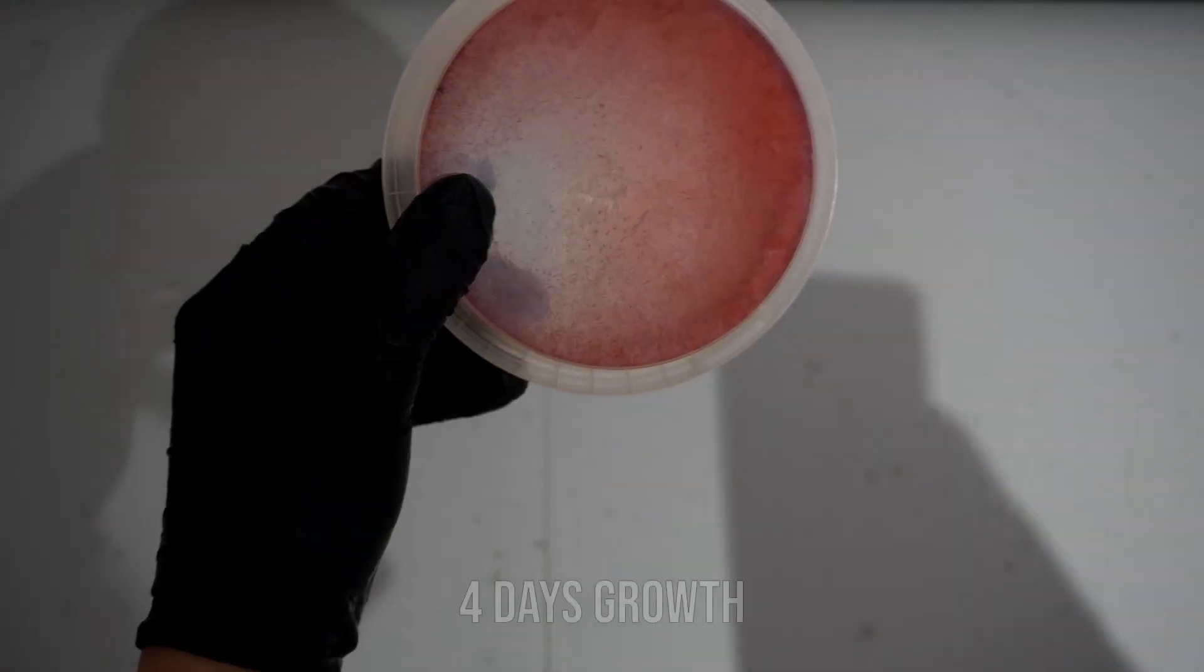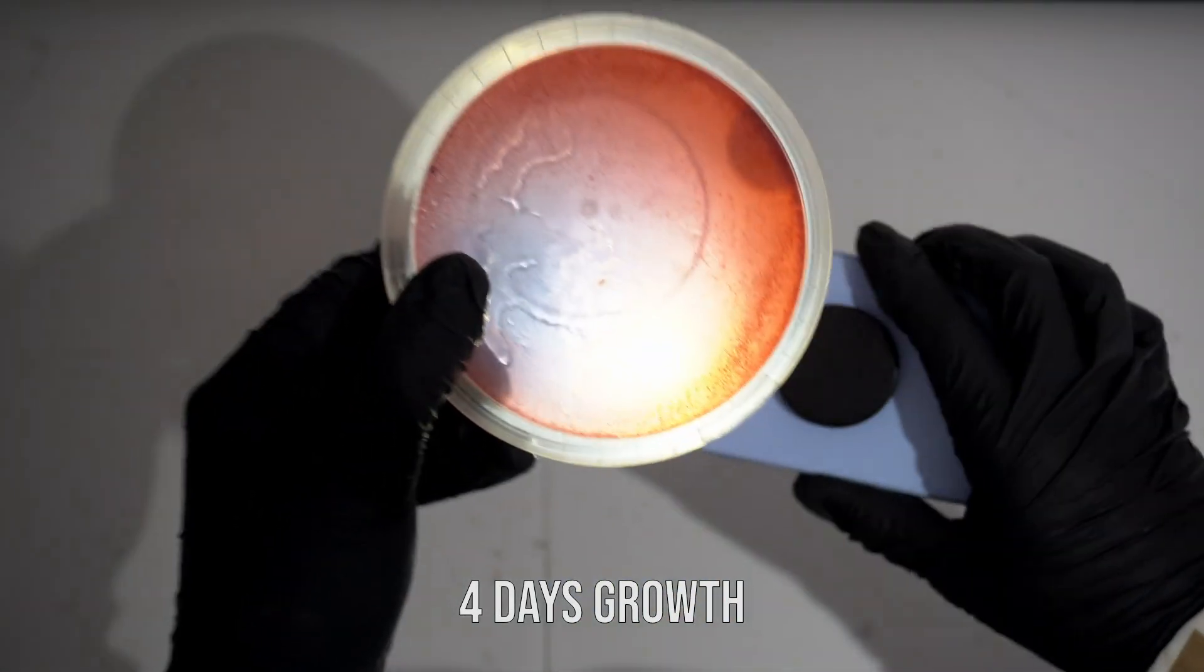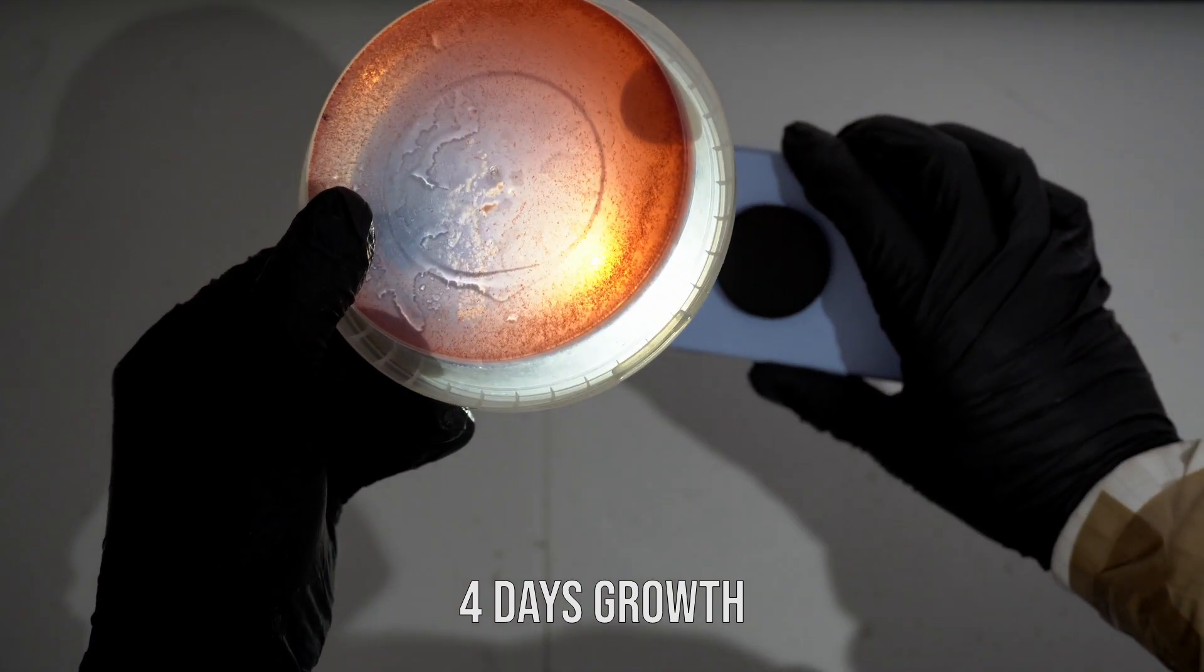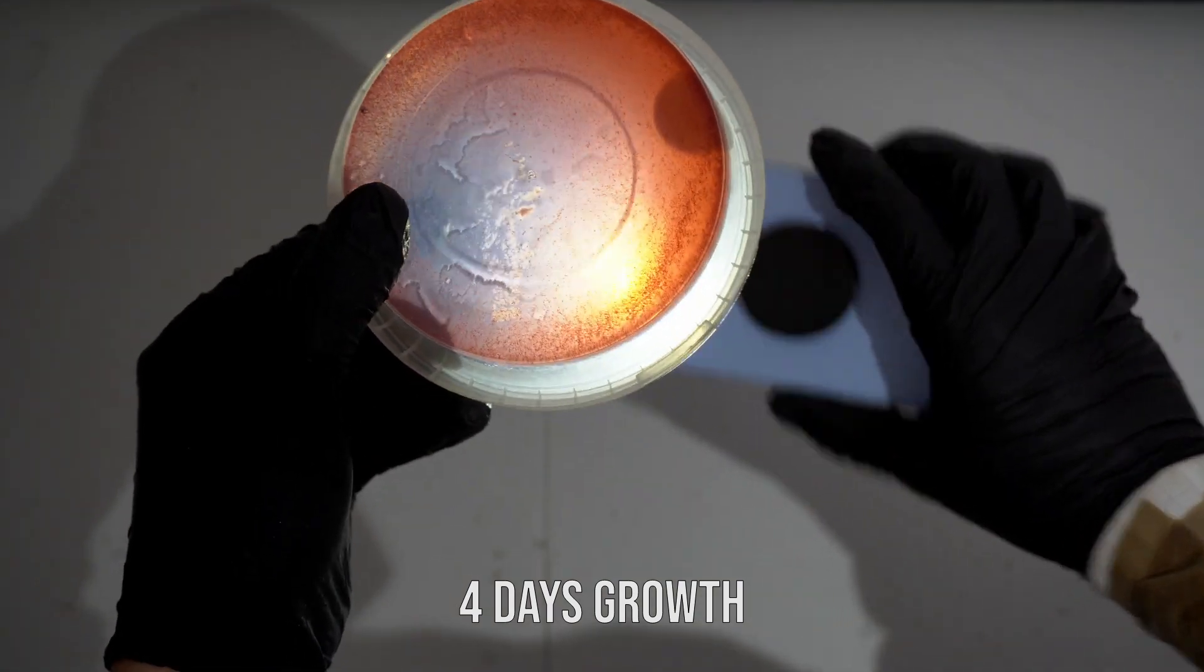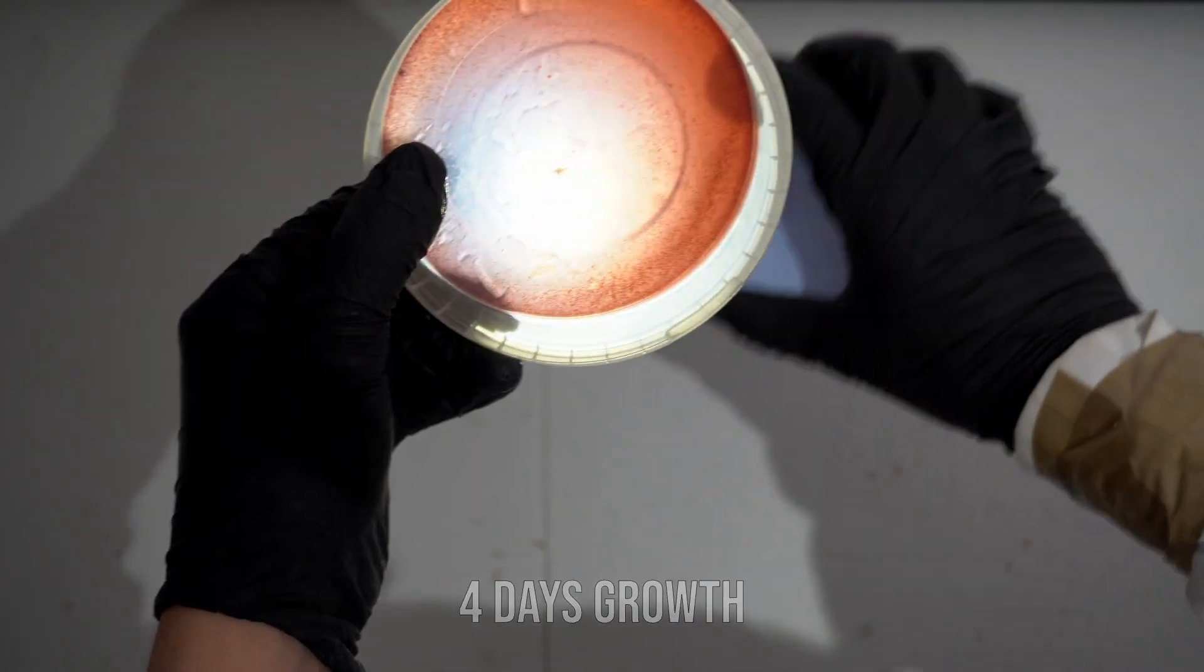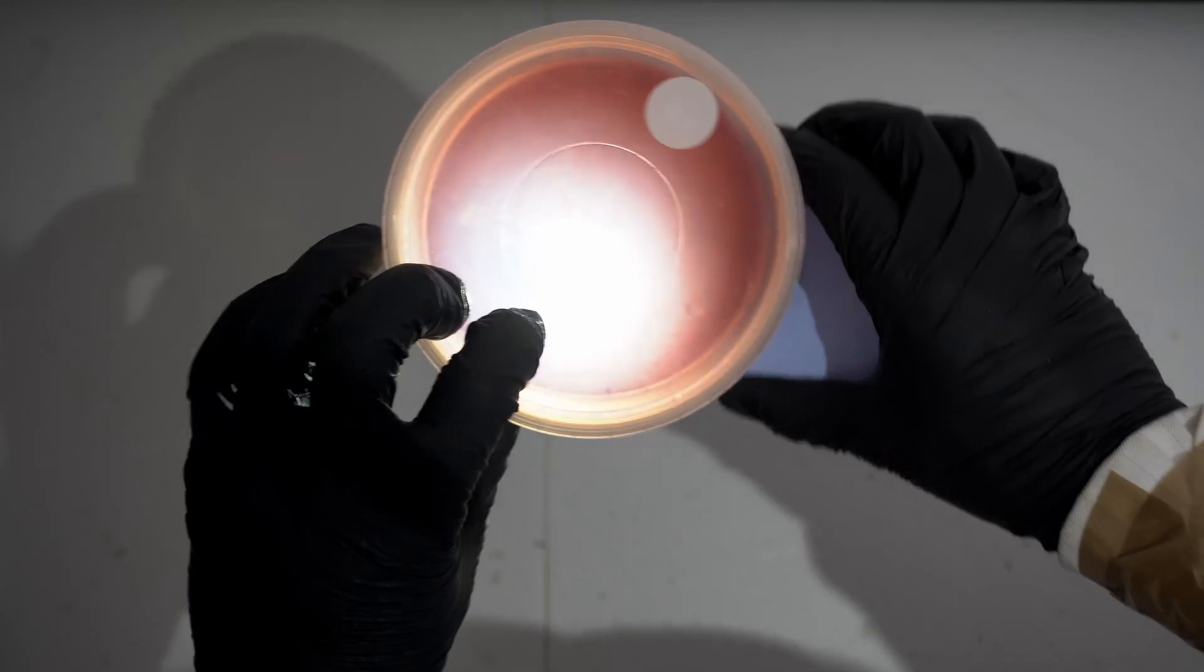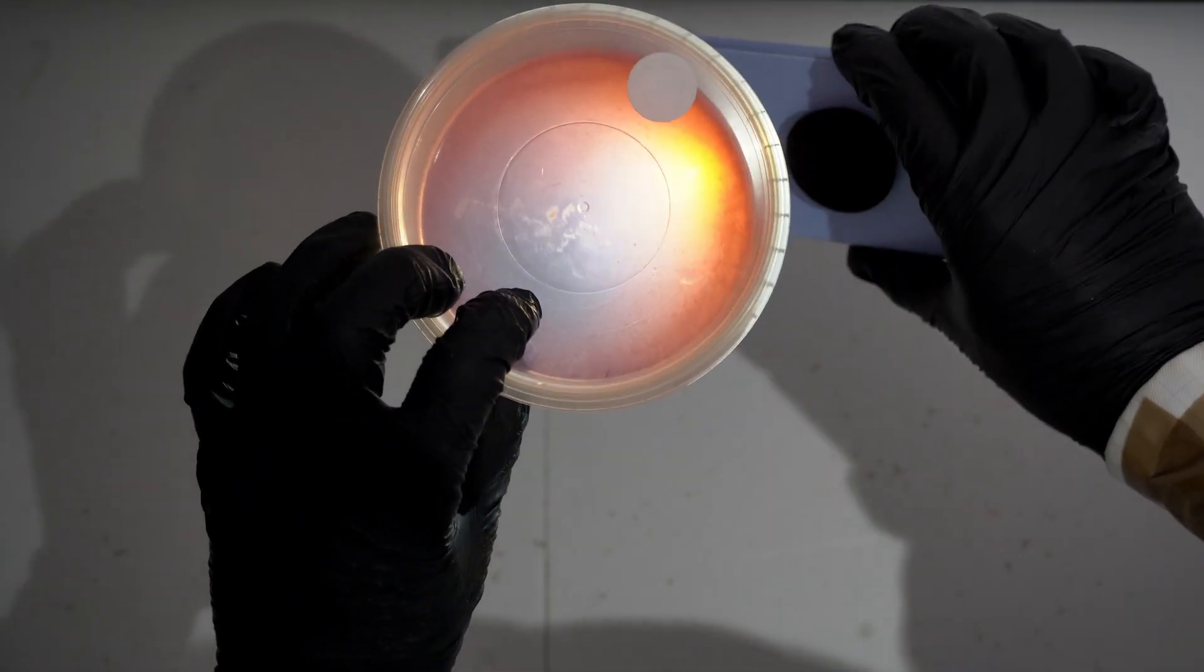What you see here is four days growth from inoculation and you can see there's a very defined line where we went into the agar and then out. That's where all the spores have either dropped or where we tapped it in the center. So instead of having it all over the plate, we can see the defined line where we made the inoculation.